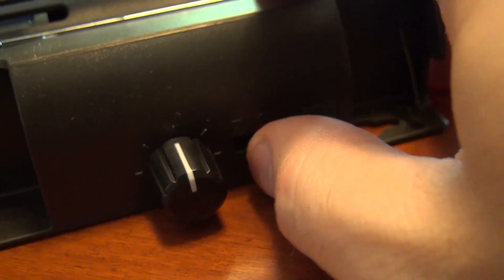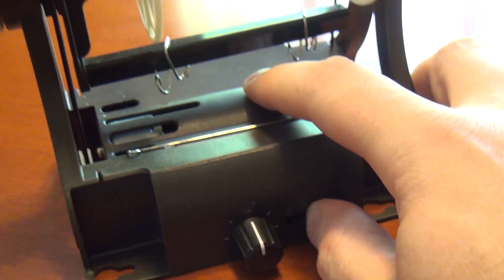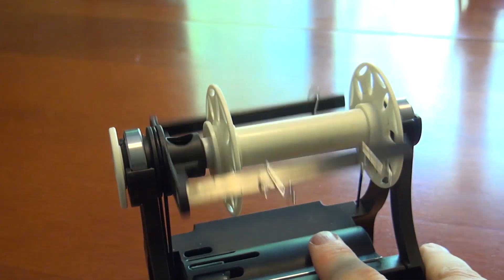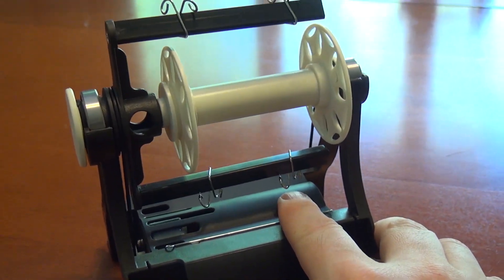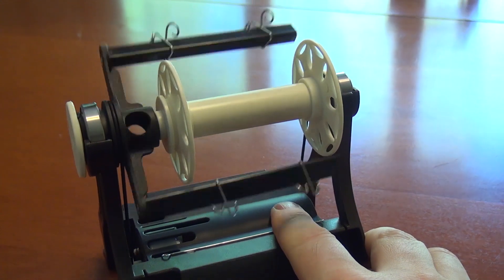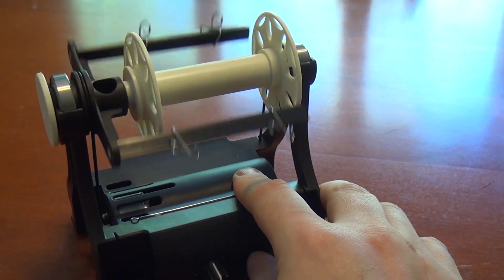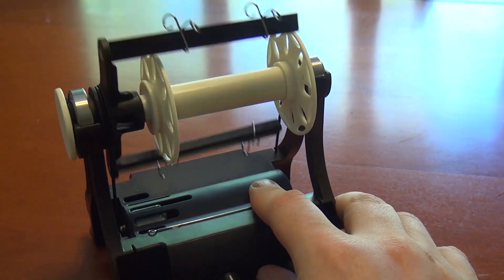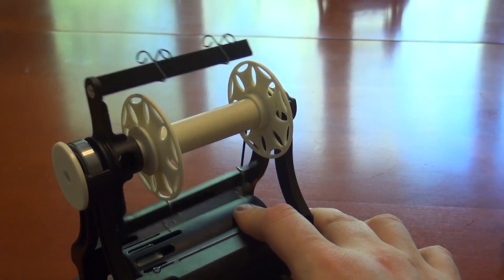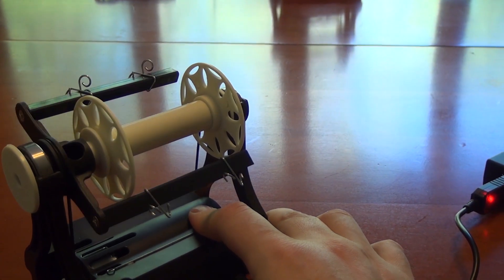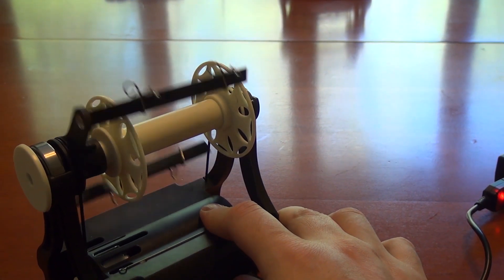Z and S twist modes spin the flyer in opposite directions. This is important when plying multiple singles together into multi-ply yarn. We'll cover that later in this video when we explain how to spin yarn. For now I'll just say that Z and S positions make the flyer spin in opposite directions.